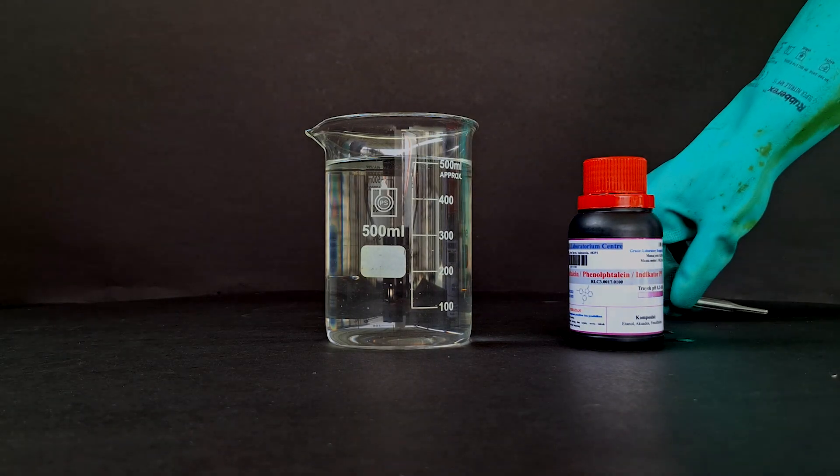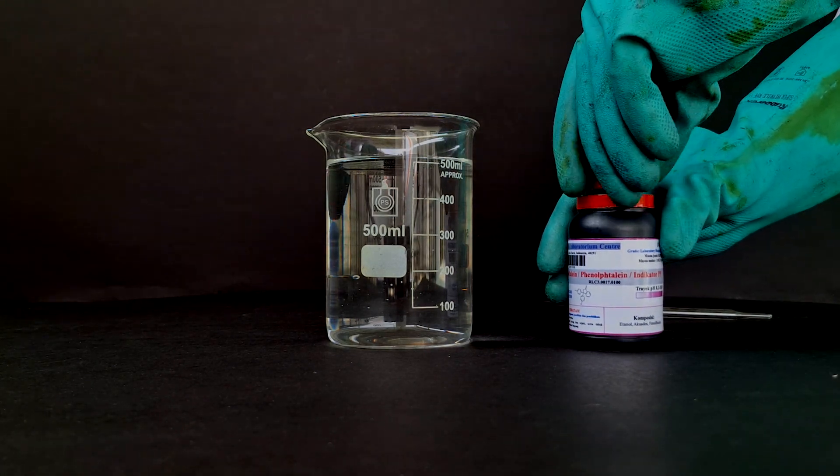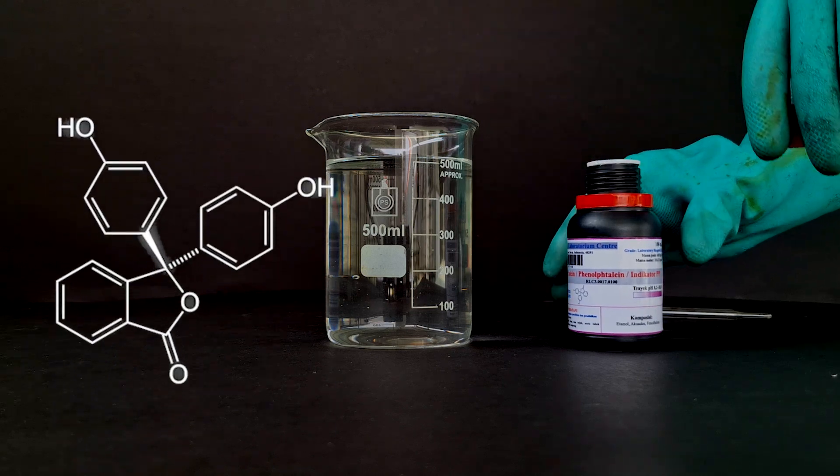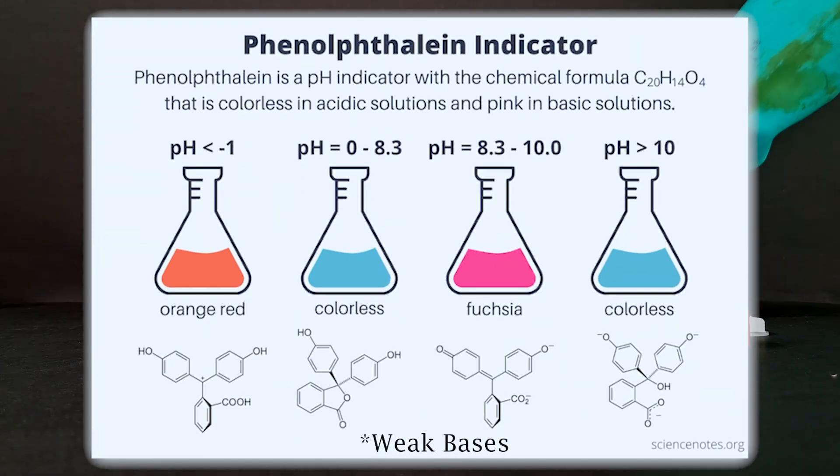There are many indicators commonly used for this experiment. However, the most commonly used is undoubtedly phenolphthalein, due to its powerful pink color in the presence of bases, such as ammonia.